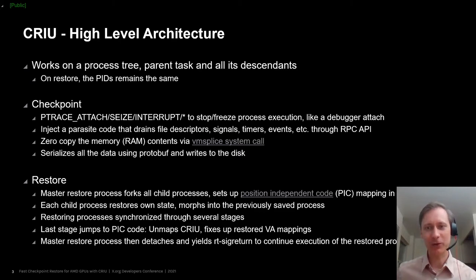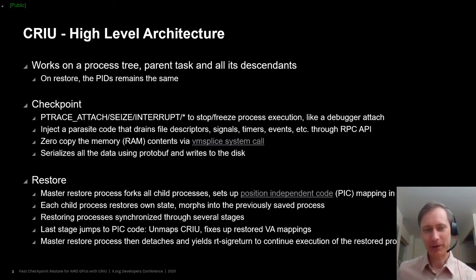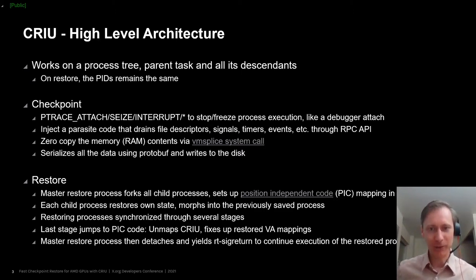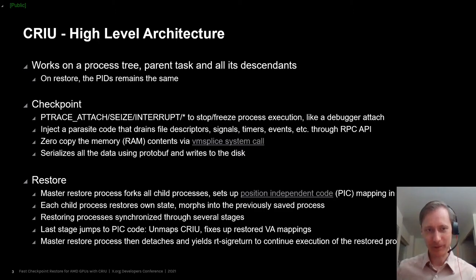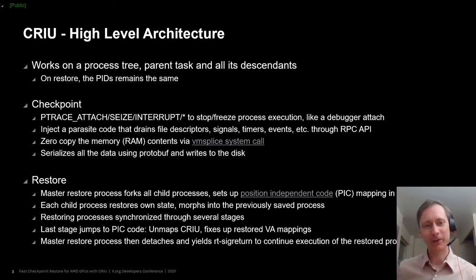CRIU stops and freezes the execution of the target processes, similar to what a debugger would do. Then it uses that to inject some parasite code into the process that helps it drain certain resources from that process — things like file descriptors, signals, timers, events and so on — through a remote procedure call kind of API via the ptrace system call. One of those RPC functions uses zero-copy to save the RAM contents — the memory contents — from the child process. The VM splice system call provides a mechanism for mapping pages from the target process into the CRIU process and avoids an extra copy in system memory when the system memory contents are saved.